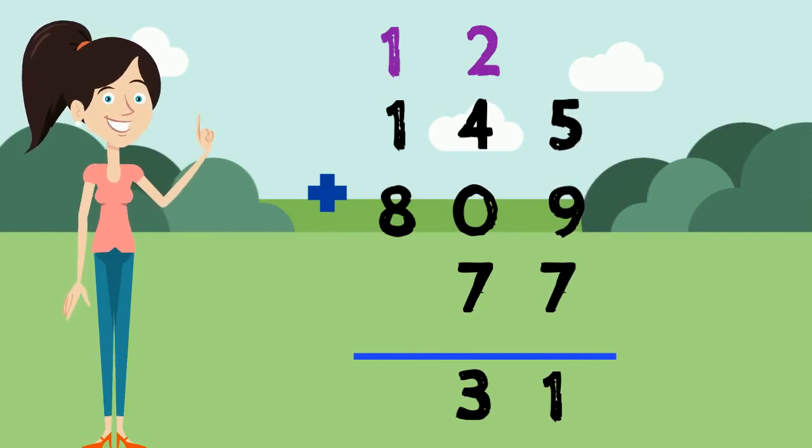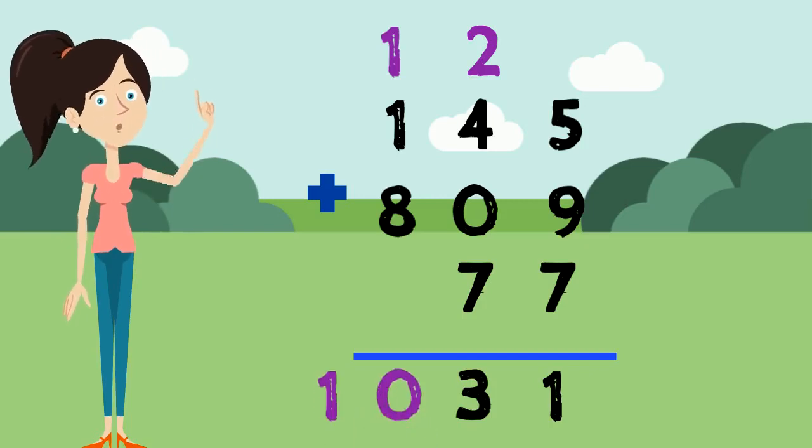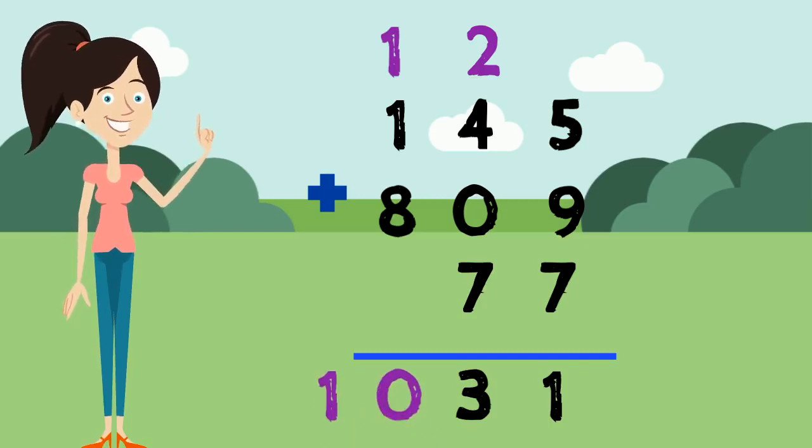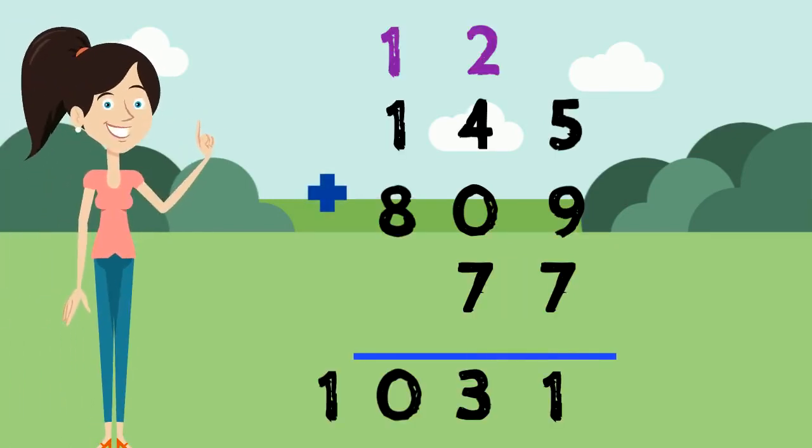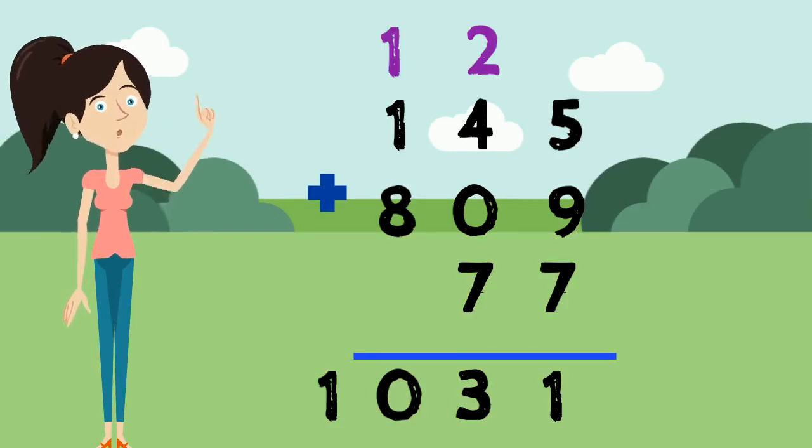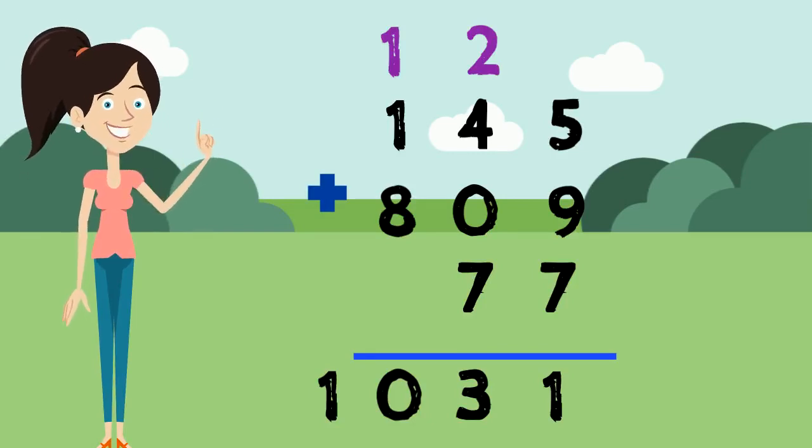Last, we have the hundred's place column to add. 1 plus 1 plus 8 equals 10. Oh, another 2-digit number. But this time we don't need to carry or trade because there's no more columns left to add. So we won't be getting in the way of any answers by leaving both the digits in the answers. So our answer is 1031.